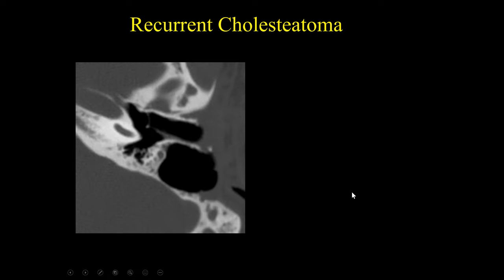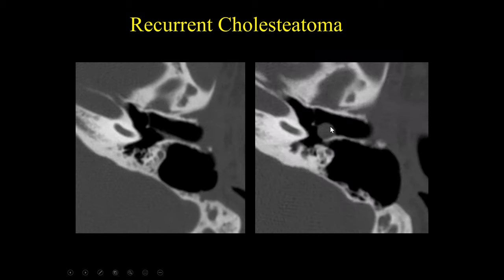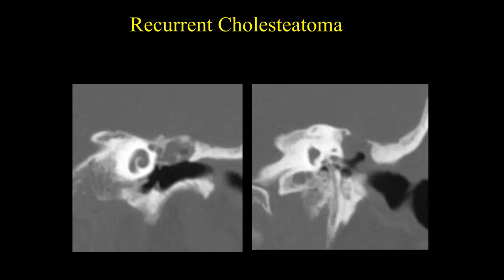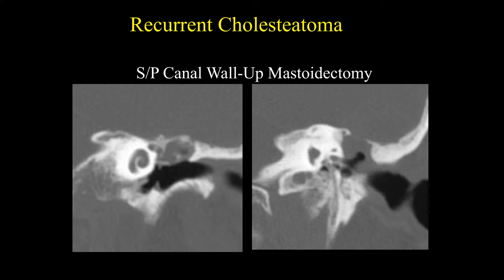This imaging assessment can be helpful to evaluate for cholesteatoma recurrence. When we see a canal wall up mastoidectomy, we're pretty sure the initial cholesteatoma was small. When we see a mass involving the external auditory canal at the junction of the tympanic membrane, we can say with high confidence this is cholesteatoma — because with the canal wall up, anything that grows back is probably cholesteatoma. Additional examples show recurrent cholesteatoma with thinning of the tegmen tympani roof, in patients status post canal wall up mastoidectomy.